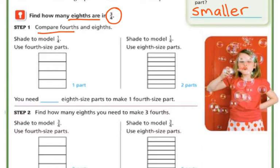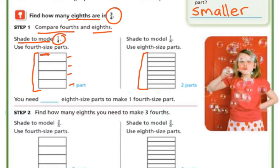If I compare 4ths and 8ths, I have my model. This model says to shade 1/4. As you can see, they're the same exact size — only this one is broken up into 4 parts. I'm going to shade 1 of the 4ths. Now over here, I'm going to have the same part and shade 1/4, but using the 8th-size parts.